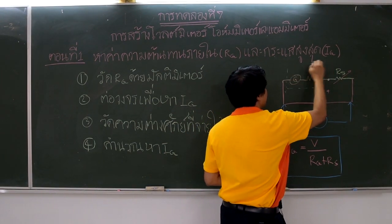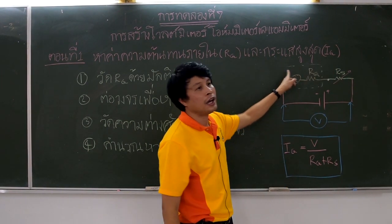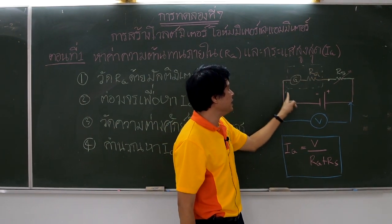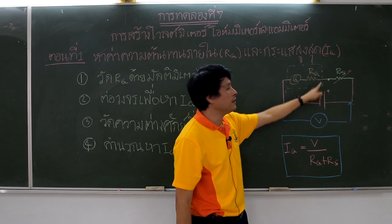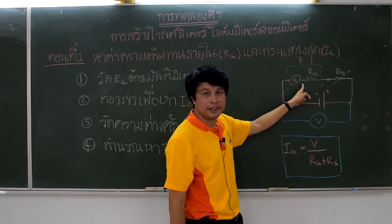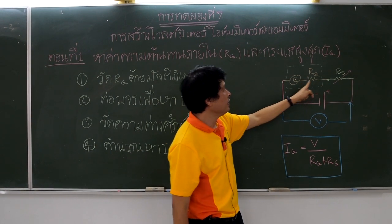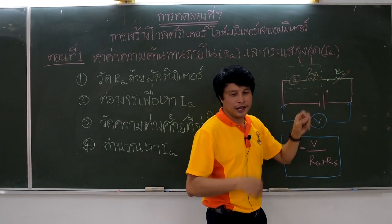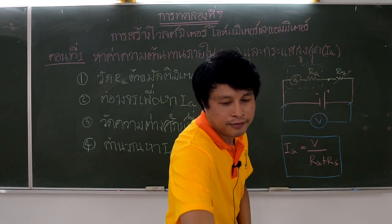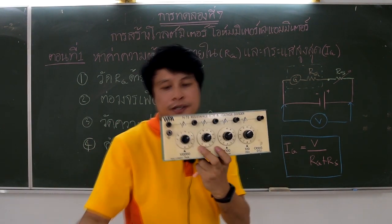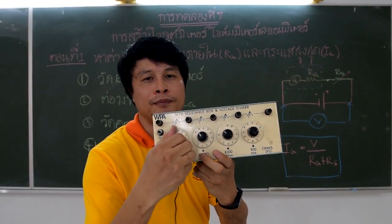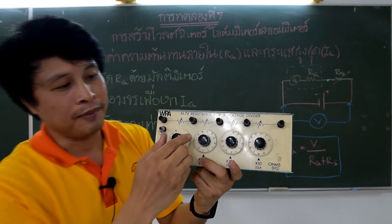In the circuit, we have the symbol G in a circle with RG — these inside the dotted square represent the galvanometer. If we want to adjust the current, we need to connect the galvanometer to RH in series. This device is the series resistor that we call RS — a variable resistor that you can adjust using a knob.